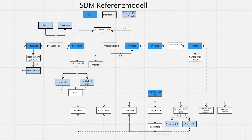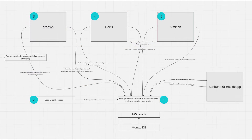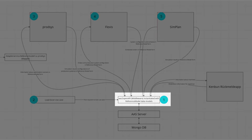The starting point is the data available in Asset Administration Shells in accordance with the SDM Reference Model. The Administration Shells are accessed via the AAS2 OpenAPI middleware.